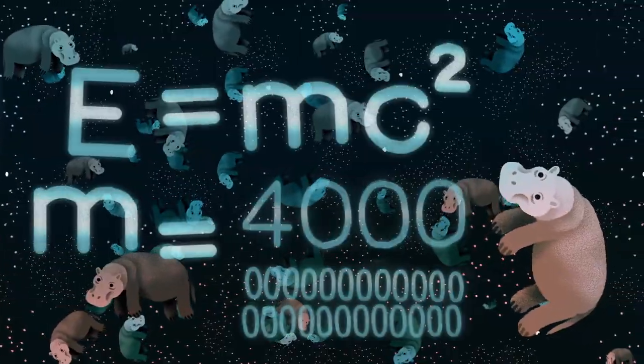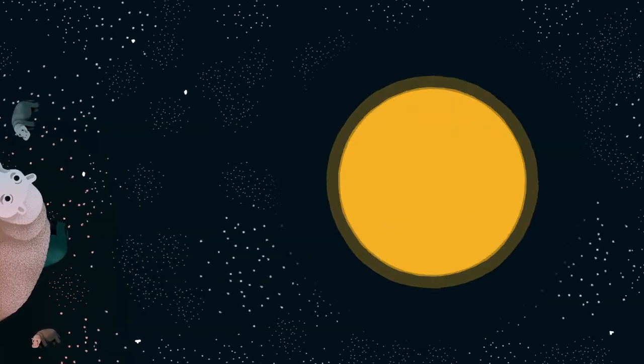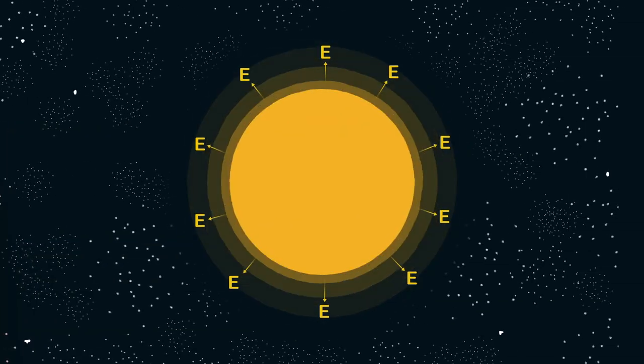So, fast forward 200 years and we have E equals MC squared and the mass of the Sun. Now we have the tools to work out how much energy is thrown out from the Sun.